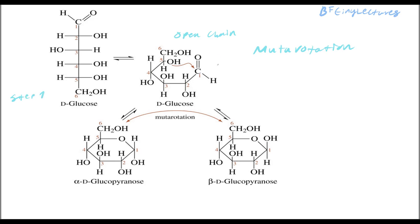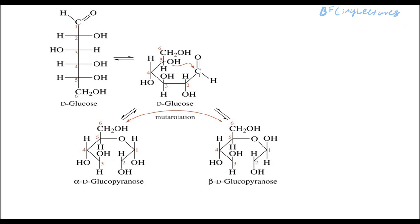Mutarotation is essentially choosing: do I need to be alpha or do I need to be a beta carbon? That's all it's choosing in this intermediate step. Now, because sugars can actually become ketones and aldehydes, the ketone form for the glucose molecule is very similar to the aldehyde form — they're very similar.